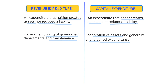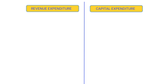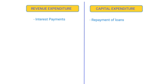Under revenue expenditure, we have interest payments — when the central government pays back the interest on loans it has taken. This does not result in the creation of any asset or the reduction of any liability, so it comes under revenue expenditure. Note that when the government pays back the actual principal amount of the loan, that results in a reduction of liability and therefore comes under capital expenditure. But interest on loans comes under revenue expenditure.